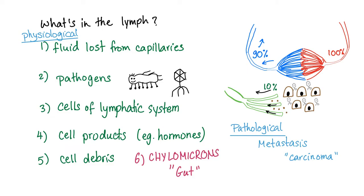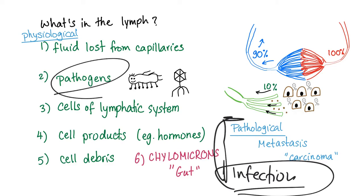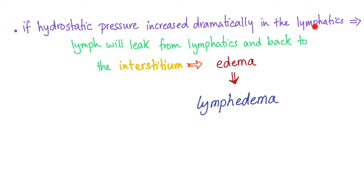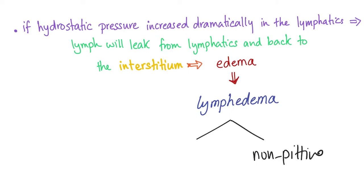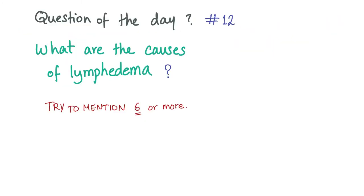Also infection — if you have any major infection, pathogens are included, but this is pathological. If the hydrostatic pressure increases in the lymphatics, lymph will leak from the lymphatics back to the interstitium. This is called edema — and since this is lymph, it's called lymphedema. Is lymphedema pitting or non-pitting? The answer is non-pitting. Pitting edema is things like cirrhosis, nephrotic syndrome, and CHF — but lymphedema is non-pitting edema.